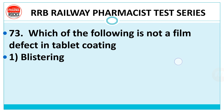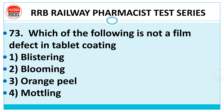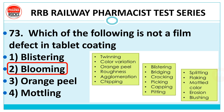Question 73: which of the following is not a film defect in tablet coating — blistering, blooming, orange peel, or mottling? The right answer is blooming — blooming is not a tablet coating defect. Blistering, orange peel, and mottling are tablet coating defects.